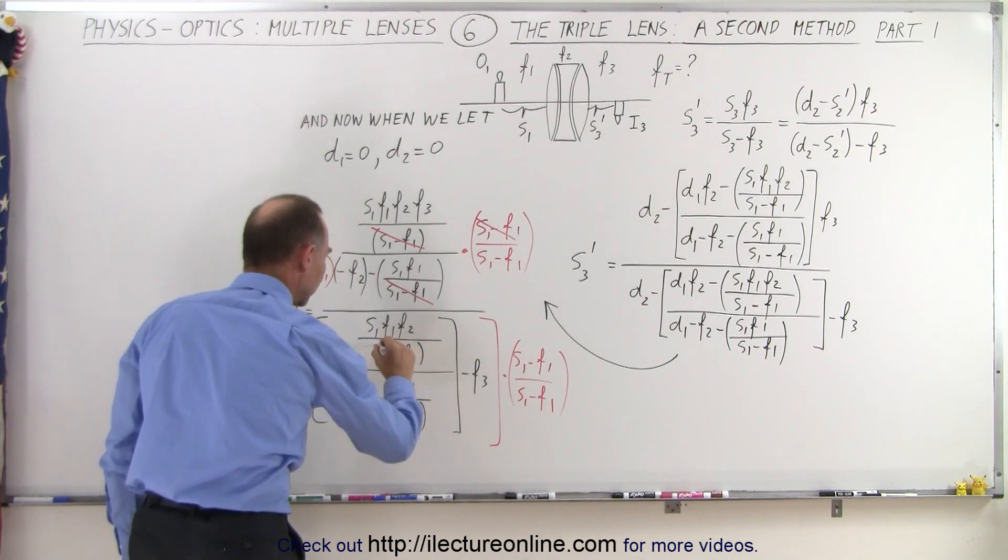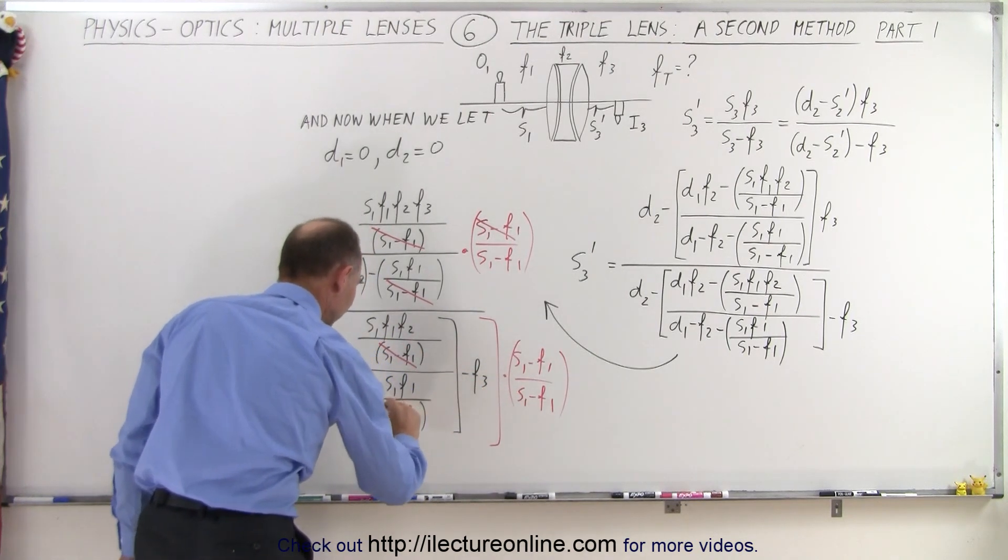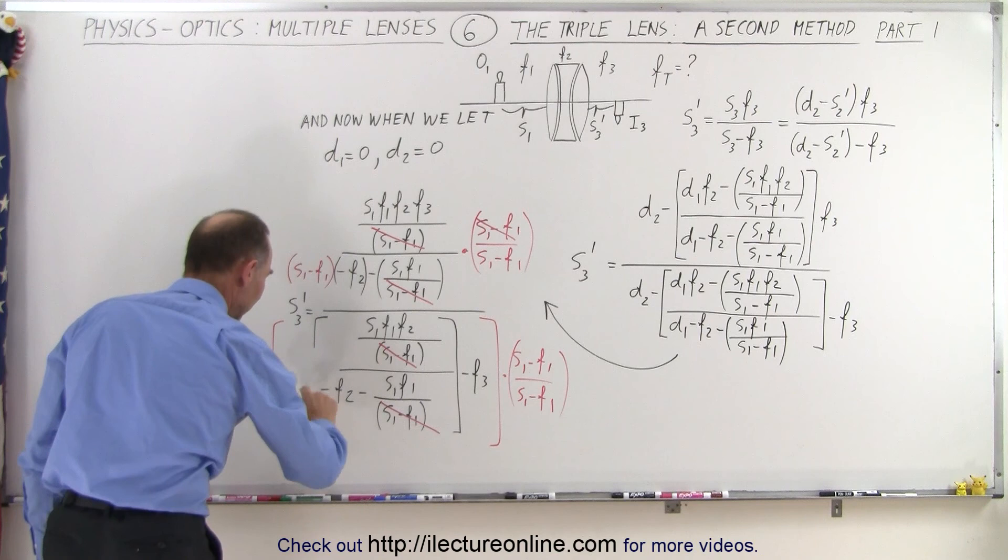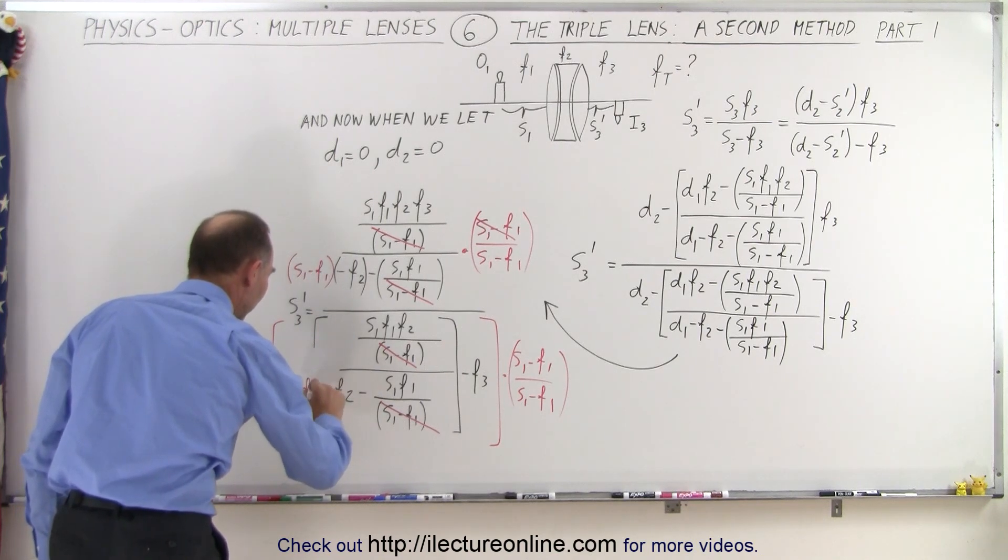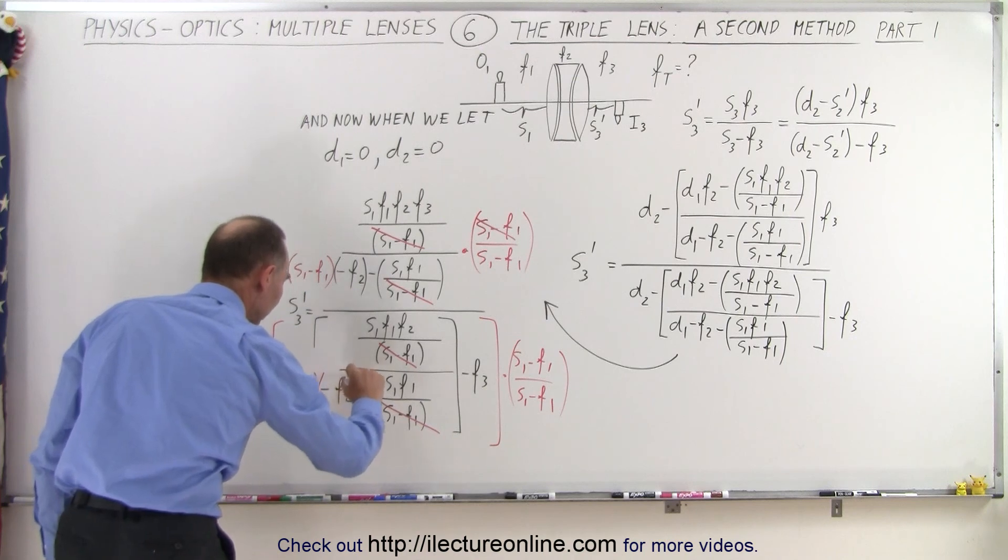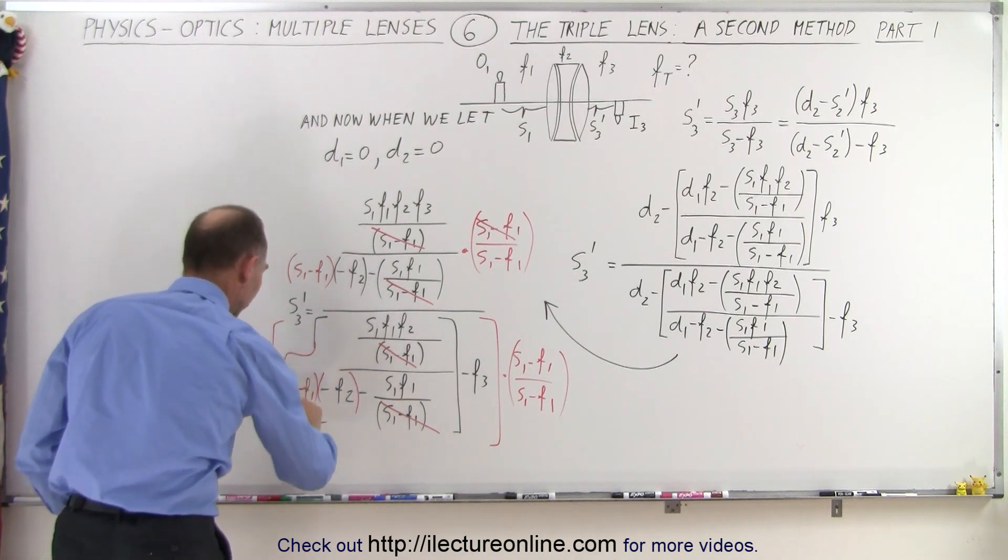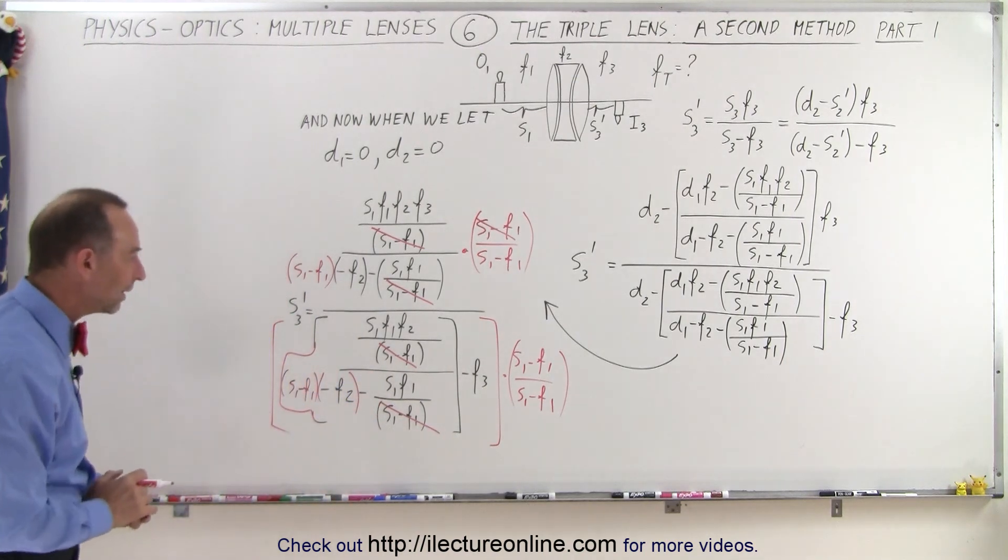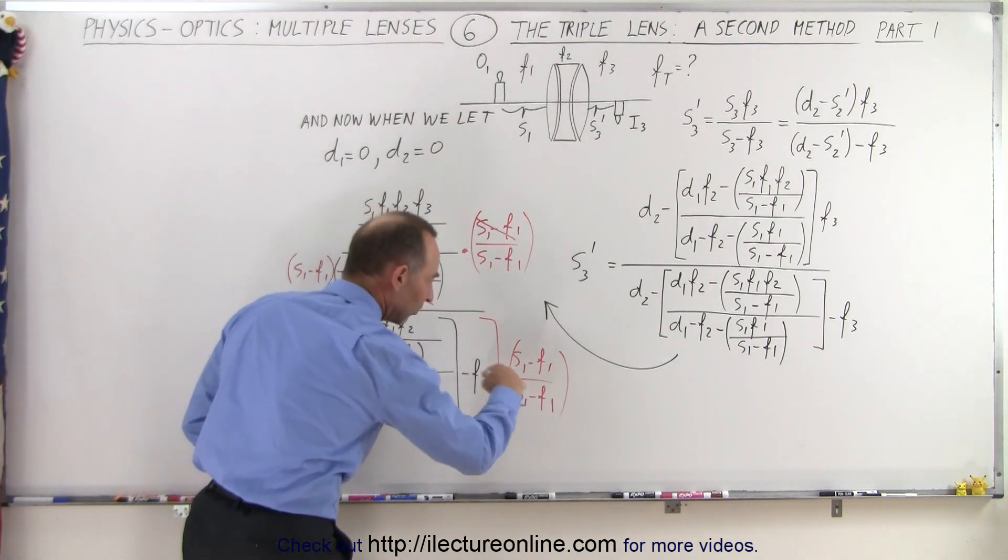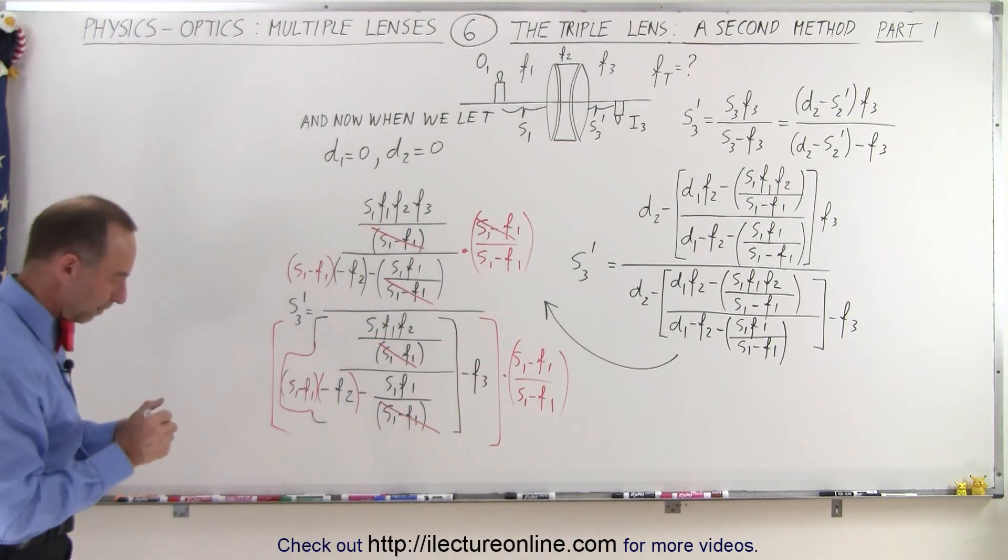This will make this disappear, and this will make this disappear if we multiply this also times an S1 minus F1, like this. Put brackets around that, and extend the bracket this way, so we include that. And notice when we multiply this times this, since we multiply this by 1, that doesn't change at all.